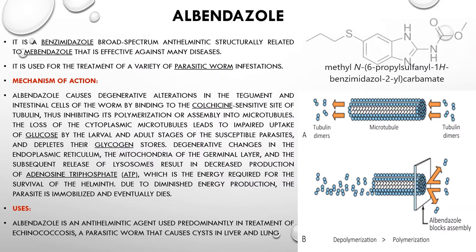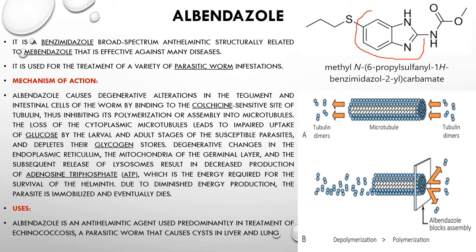The next drug is albendazole. Its structure also contains the benzimidazole moiety. It is a broad-spectrum benzimidazole anthelmintic structurally related to mebendazole, effective against many diseases. Its IUPAC name is methyl N-(6-propylsulfanyl-1H-benzimidazol-2-yl) carbamate. It is used for treatment of various parasitic worm infestations. Its mechanism is similar to mebendazole — it blocks microtubule polymerization and glucose uptake.